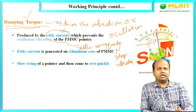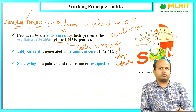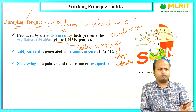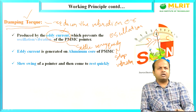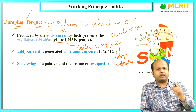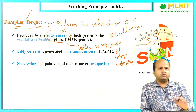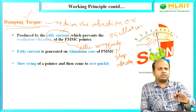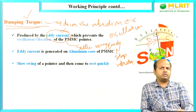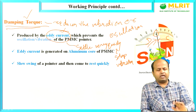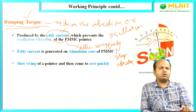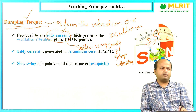So, we have studied three types of torque in PMMC: deflecting torque deflects the pointer, controlling torque controls the movement of the pointer, and damping torque reduces the vibration of the pointer. These are basically the three types of torque applicable in PMMC.